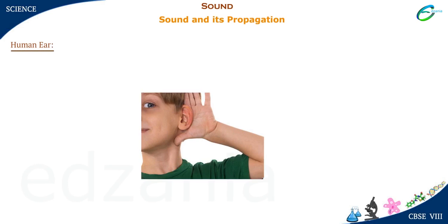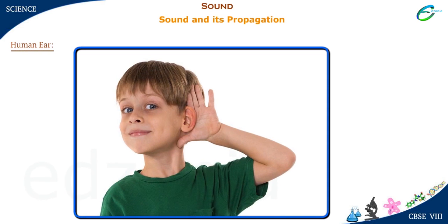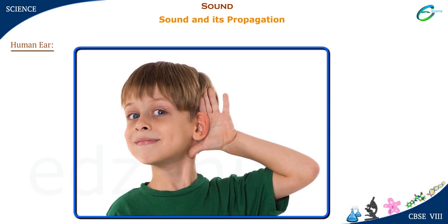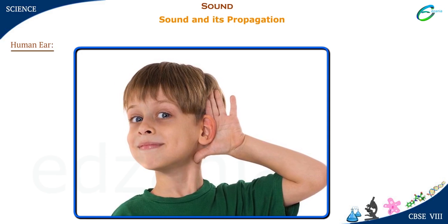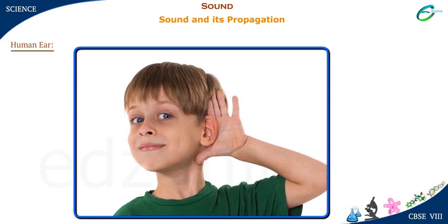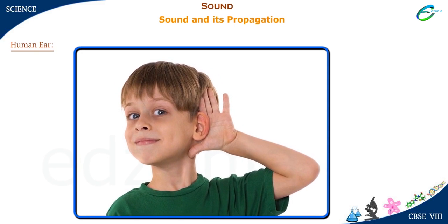Our ears are capable of distinguishing sounds produced by different sources, either people or musical instruments. We are thus able to identify different objects just by hearing their sounds.